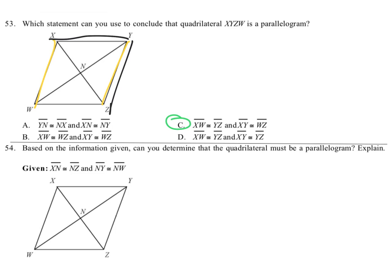Based on the information, number 54, can you determine that the quadrilateral must be a parallelogram? Explain. They say that XN is congruent to NZ, like that, and NY is congruent to NW. So can we conclude it's a parallelogram? And we can say yes.